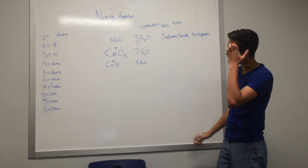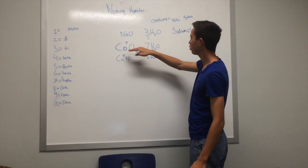For example, here. Cobalt, which has a charge of positive 2, cobalt 2 chloride, and this is 7.